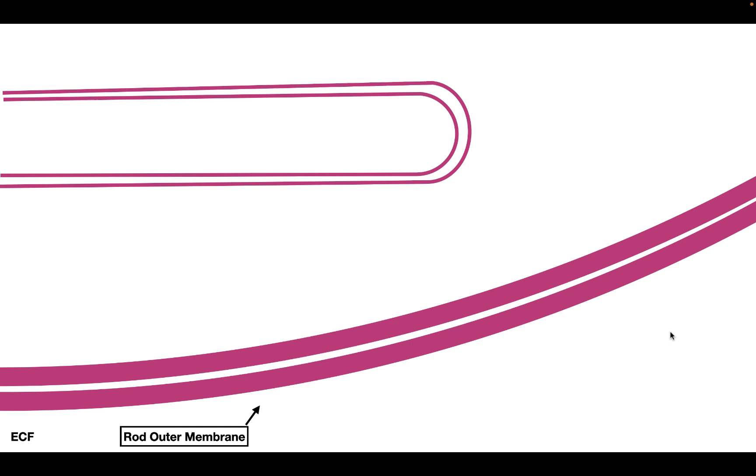In the bottom layer of our retina, we have our photoreceptor cells. The photoreceptor cells are the rods and cones. Rod cells are sensitive to light and dark, and cone cells are sensitive to color. What we have here is a close-up of a rod cell. This right here is the rod's outer membrane, and this is the free-floating disc that is present inside the rod cell.